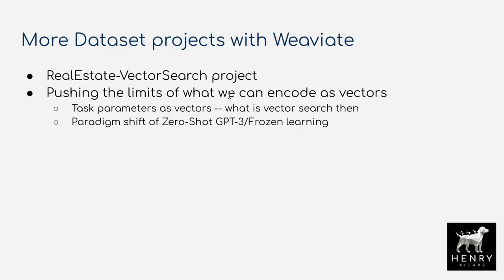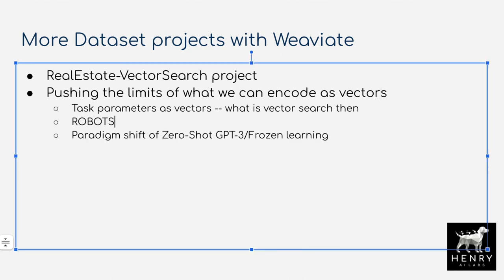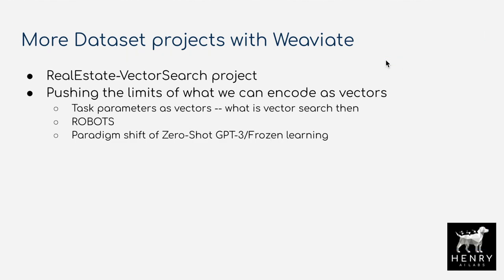The best example to illustrate this — though I didn't write it on the slide — would be robots. Robots do things like sort objects, take the bottle cap off a bottle, or juggle balls. You can think of the specific task parameters as vectors and vector-search through a skill set. This connects to the paradigm shift of zero-shot learning and GPT-3, or the image-text alignment approach in Frozen. This idea isn't fully formed, but hopefully it inspires someone to think about what kind of vector search you can do with task parameters.